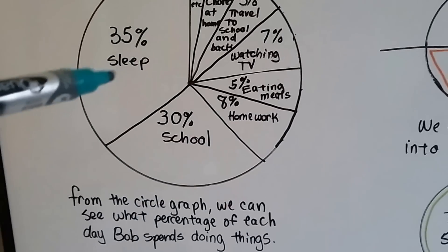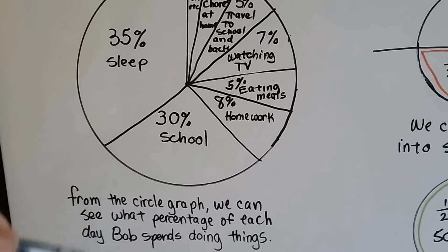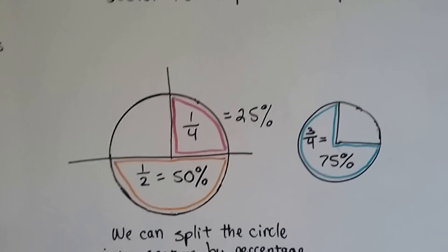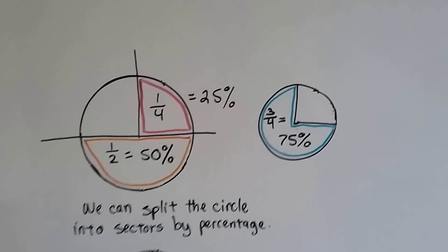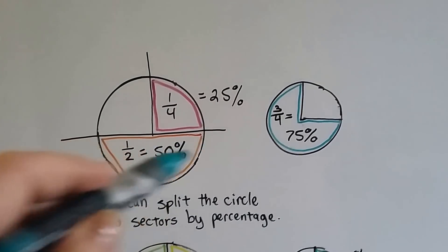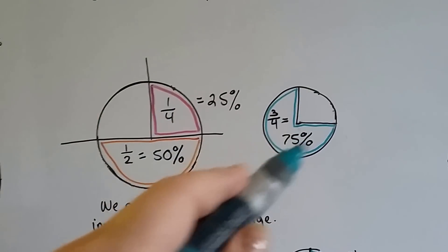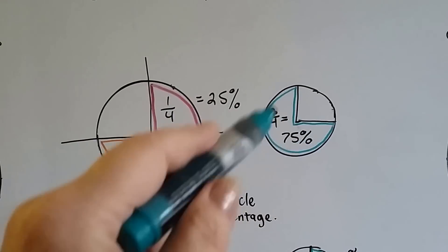From this circle graph, we can see what percentage of the day Bob spends doing things. We can split the circle into sectors by percentages. Half of it would be 50%, one-fourth would be 25%, three-fourths would be 75%.